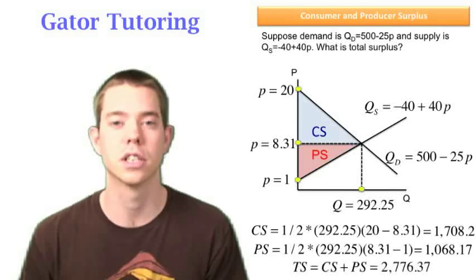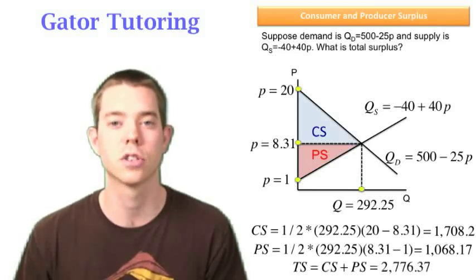So total surplus is just the addition of those two things, in this case $2,776.37.